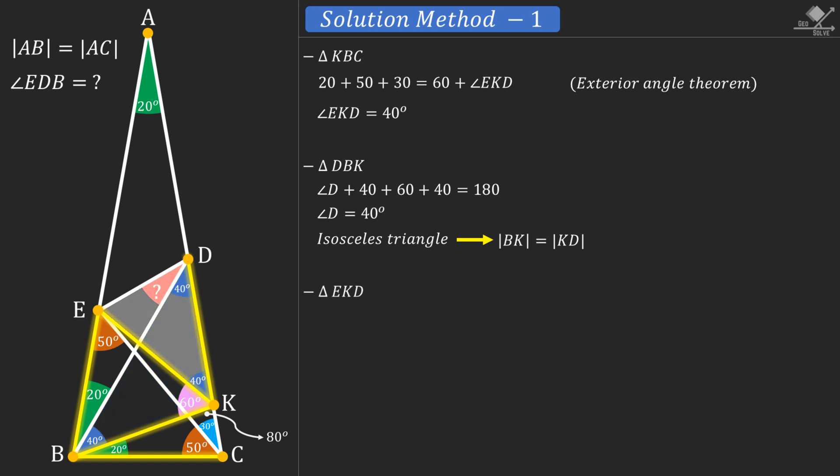Finally let's pay attention to this triangle. As you can see, this is also an isosceles triangle. Now if we call our unknown angle as A, the other base angle will be 40 plus A.